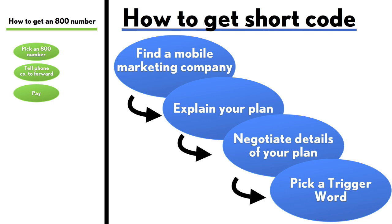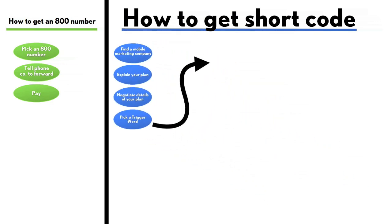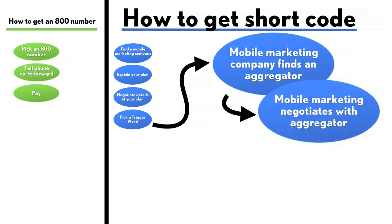The trigger word is what your supporters or customers will send to that one shared shortcode. For example, if you were an environmental group, they could send 'green' to your shortcode. Or if you were selling shoes, they could send 'shoes' to your shortcode. After that, the mobile marketing company has to find an aggregator.